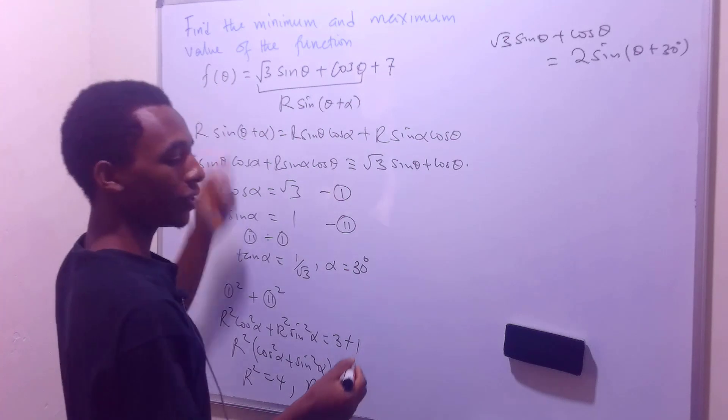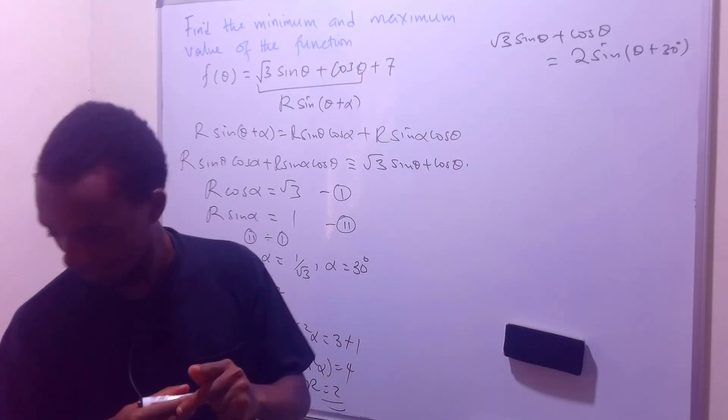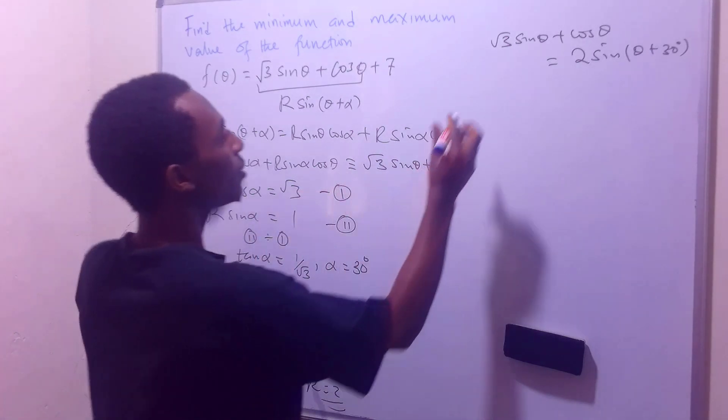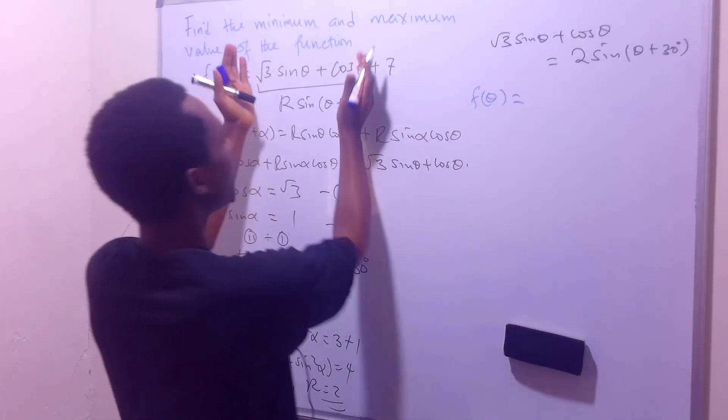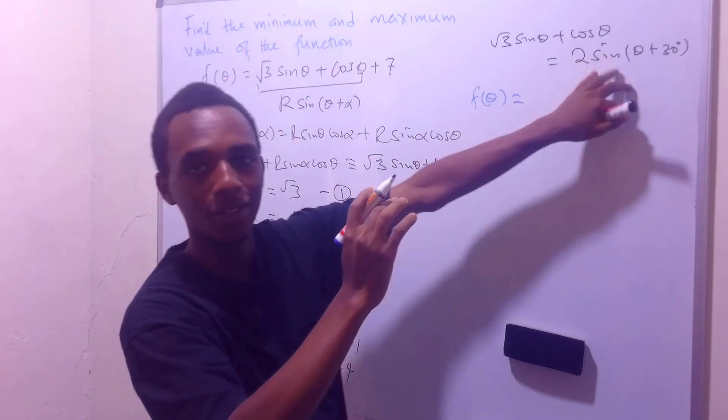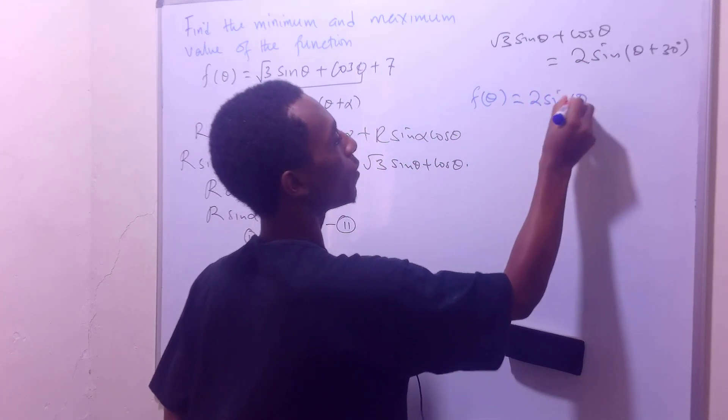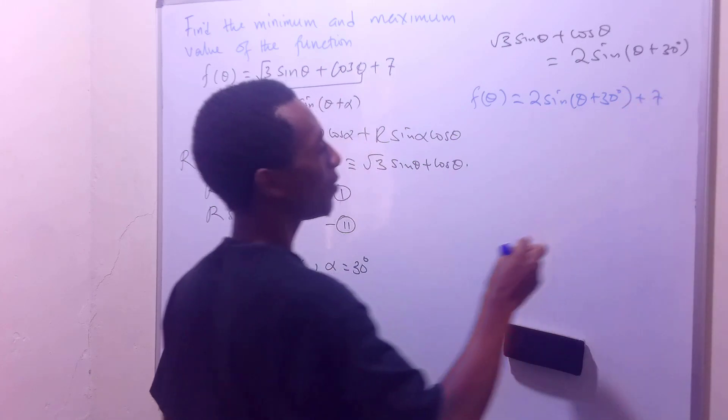And this whole function, f(θ), I'll just get another color here. So this function, f(θ), is going to be, instead of this, I'll now write only this here. So 2 sin(θ + 30°) + 7.